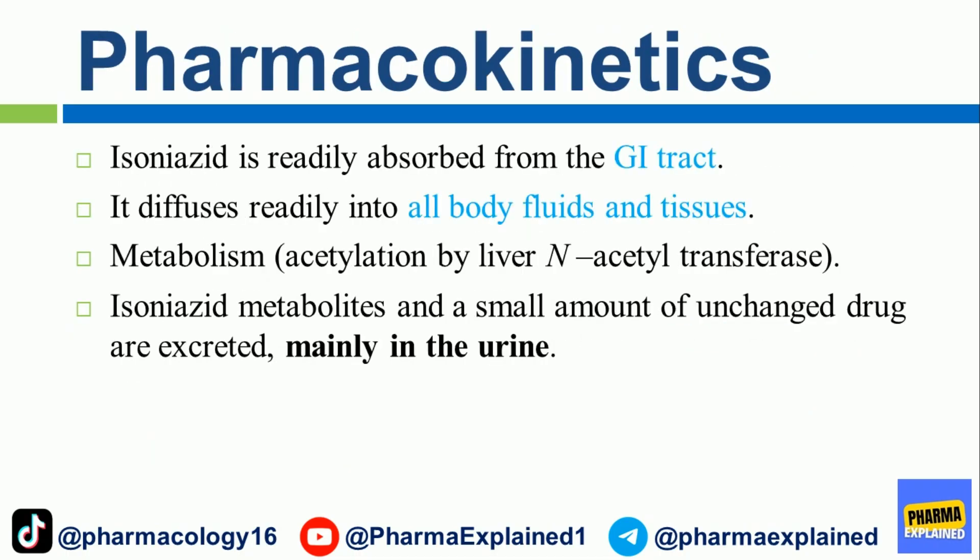Pharmacokinetics: Isoniazid is readily absorbed from the GI tract and diffuses readily into all body fluids and tissues. Metabolism occurs by acetylation by liver N-acetyltransferase. Isoniazid metabolites and a small amount of unchanged drug are excreted mainly in the urine.